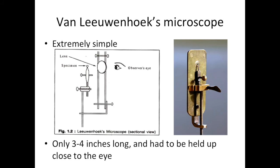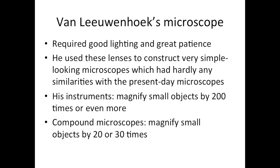In comparison to a modern microscope, Van Leeuwenhoek's design is extremely simple, using a single lens mounted in a tiny hole in a brass plate that makes up the body of the instrument. The specimen was then mounted on a sharp point that sticks up in front of the lens, and its position and focus could be adjusted by turning the two screws. The entire instrument was only 3-4 inches long, and had to be held up close to the eye, requiring good lighting and great patience to use.